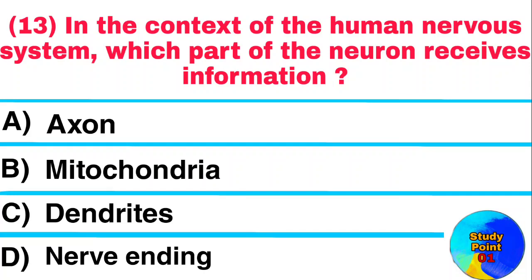Question: In the context of the human nervous system, which part of the neuron receives information? Answer: Dendrites.